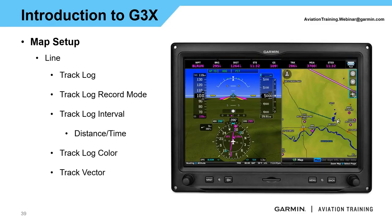Under the line group we have track log — a breadcrumb track as you're flying along, keeping reference of where you've been. You can change the track log color as needed. Another feature I like is the track vector: a line extending in front of the aircraft that you can set to a distance or a time. I personally like flying with a time setting — at the end of that track vector line, I know where the aircraft will be in that amount of time. Very useful customizable options.